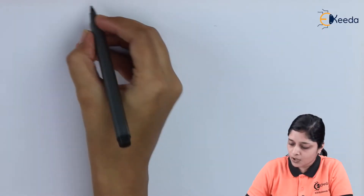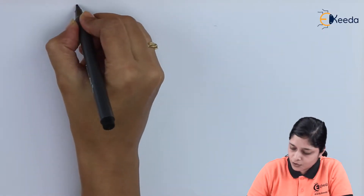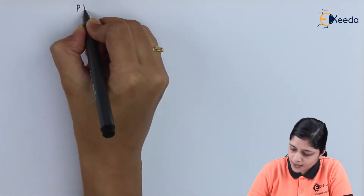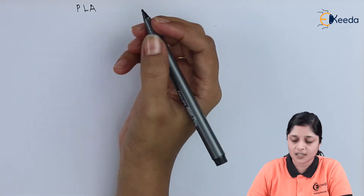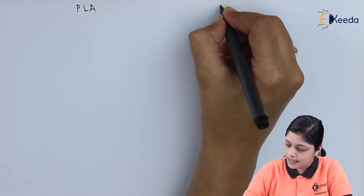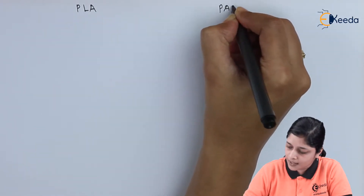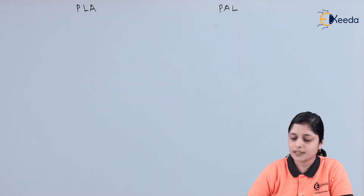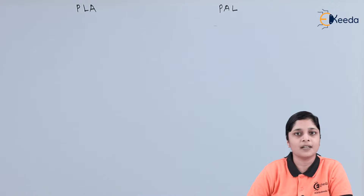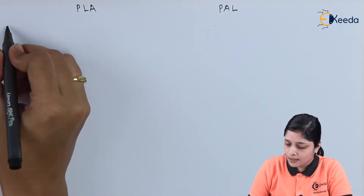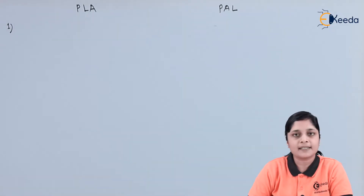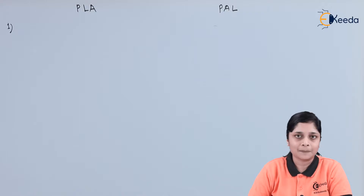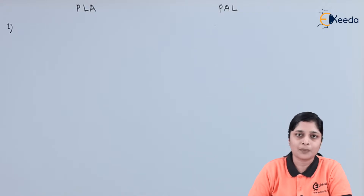The first column consists of PLA, that is Programmable Logic Array, and the second column is PAL, that is Programmable Array Logic. The first point we are going to consider is about the AND plane and OR plane.